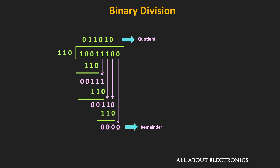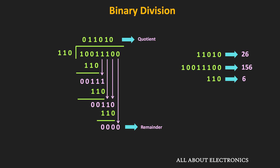In decimal, 11010 corresponds to 26. Our dividend was 156 and the divisor was 6, so in decimal the quotient is also 26 with a remainder of 0 — confirming our binary division is correct. By performing binary-to-decimal conversion, we can verify our division result. Let's take one more example so that the division procedure becomes clearer.